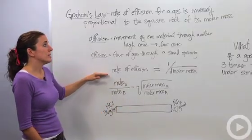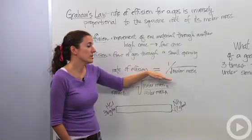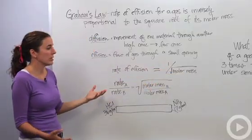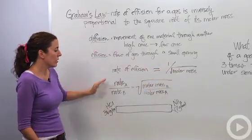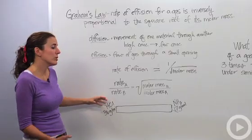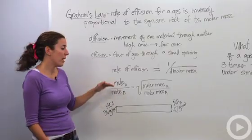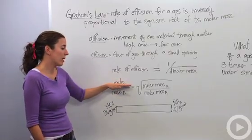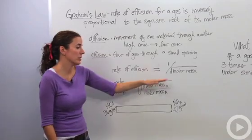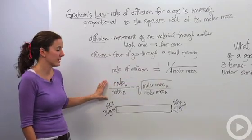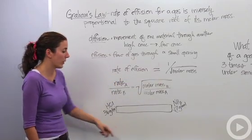So we know the rate of effusion is equal to the inverse of the square root of the molar mass. So let's actually put that into action. Typically when you're talking about the rates, you're going to compare one gas to another. So you're going to compare a gas A to gas B. And this is actually Graham's Law and I'll get to this in just a second, but I want to describe it in a pictorial way down here.